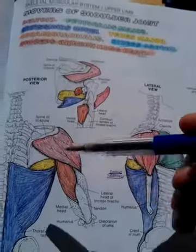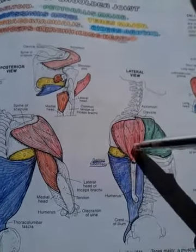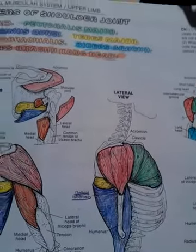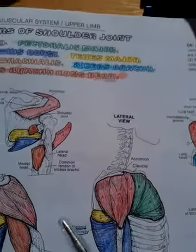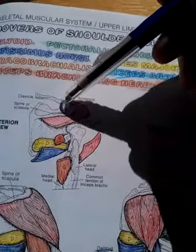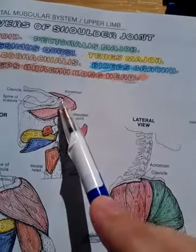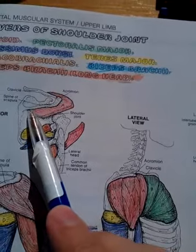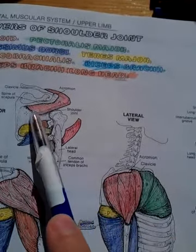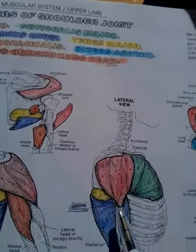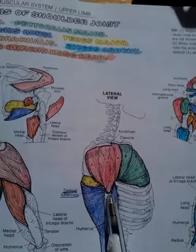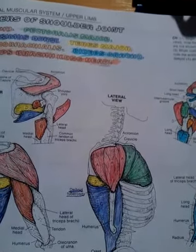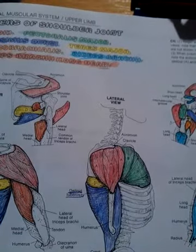Then we have the deltoid muscle. It originates on the lateral third of the clavicle, the acromion, and the spine of the scapula. It inserts on the deltoid tuberosity. Its function is abduction of the arm.